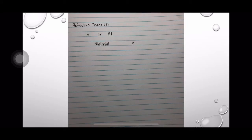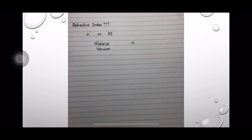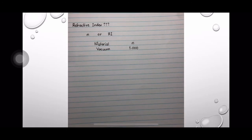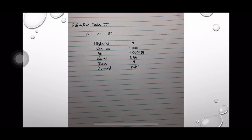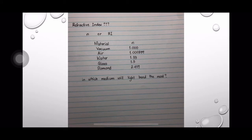But what is refractive index? Let's see some values of refractive index of some materials. Vacuum has a refractive index of 1, air has a refractive index very close to 1, water is 1.33, glass is 1.5, and diamond is 2.417. In which medium will light bend the most? The answer is diamond, because it has the highest refractive index. These values are specific to the material, wherever they are in the universe.